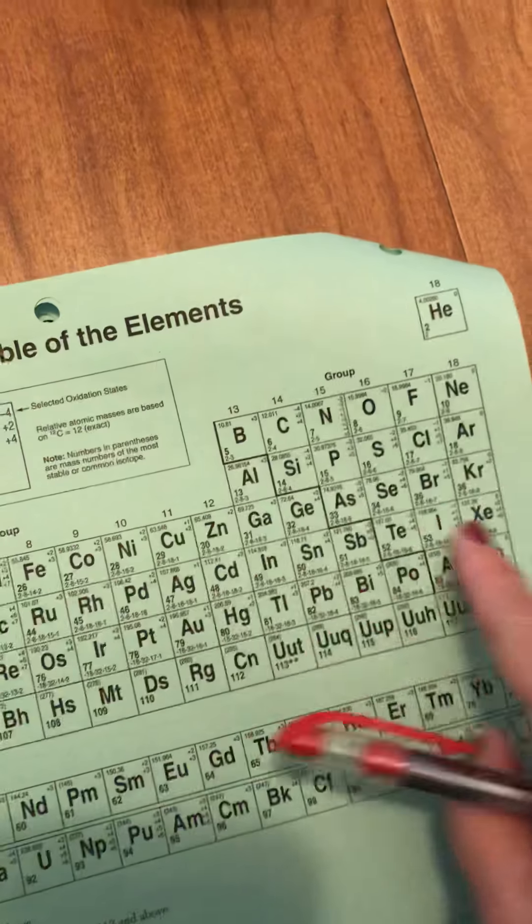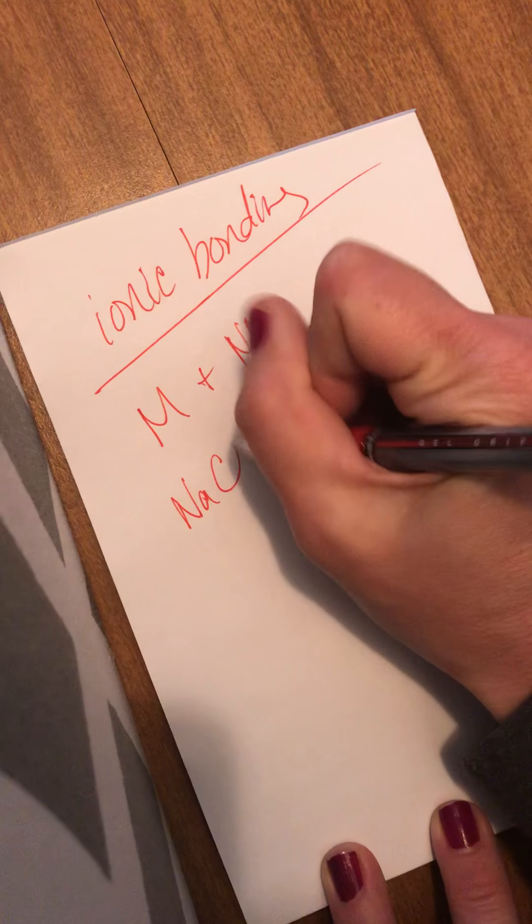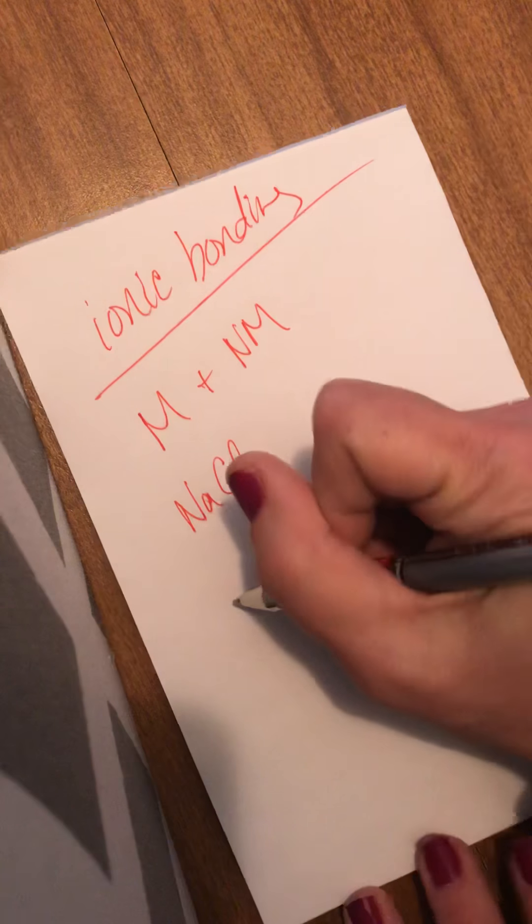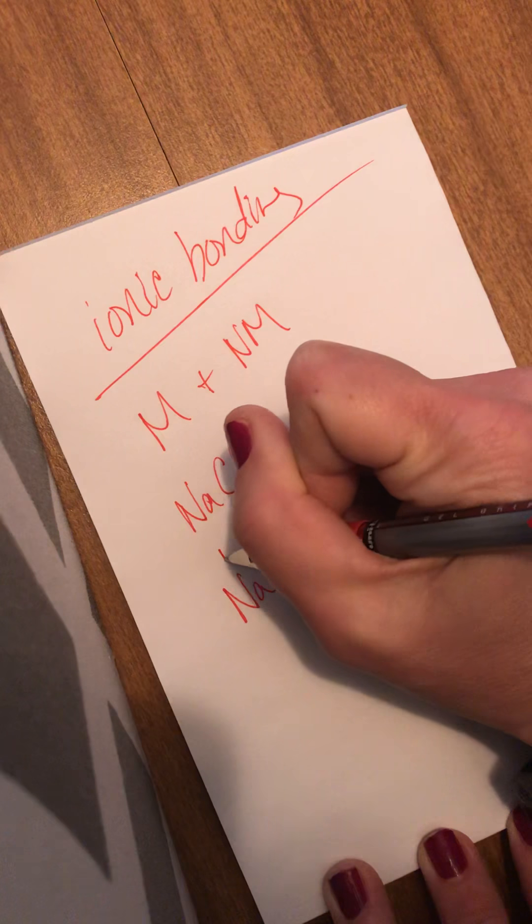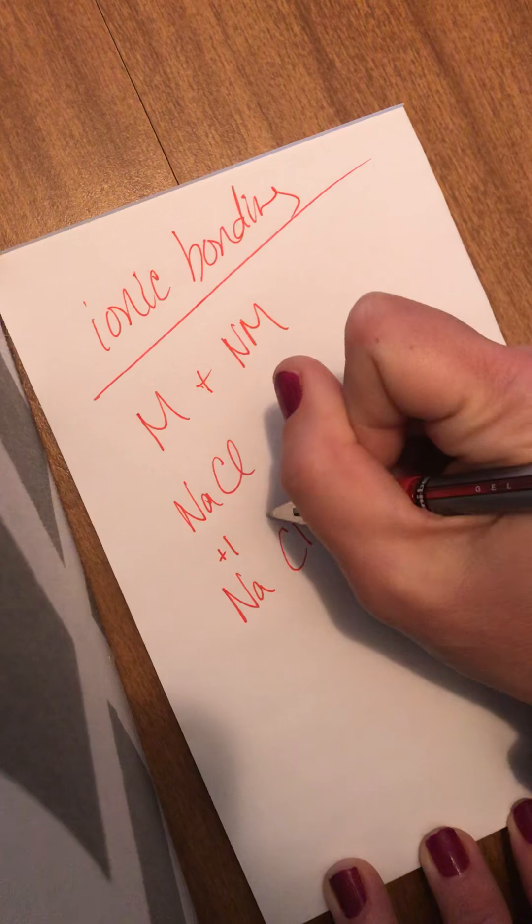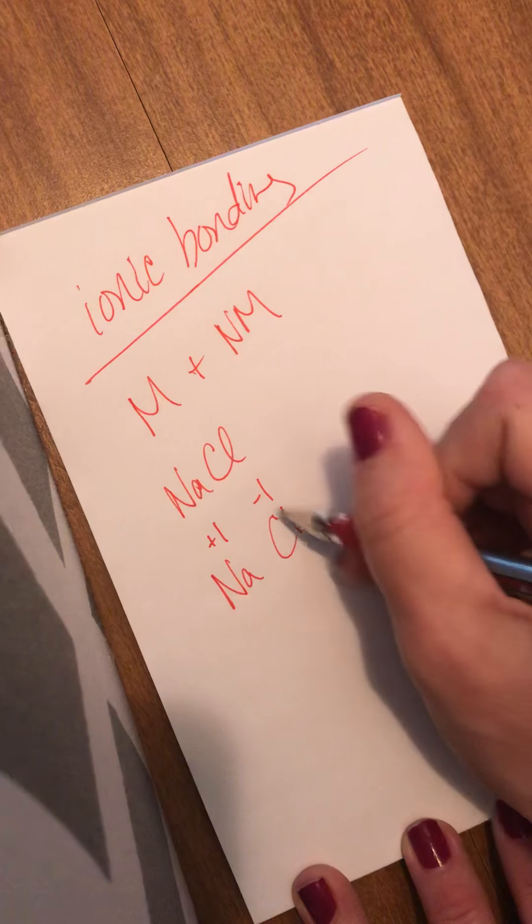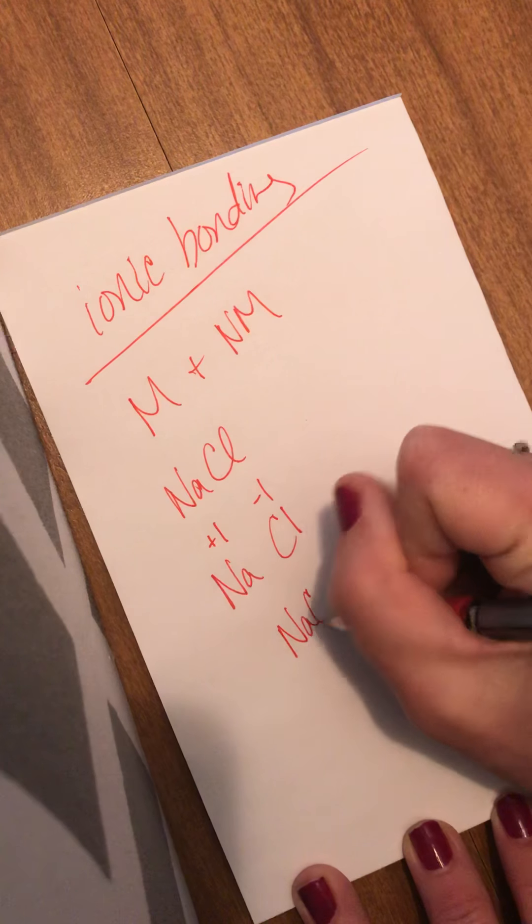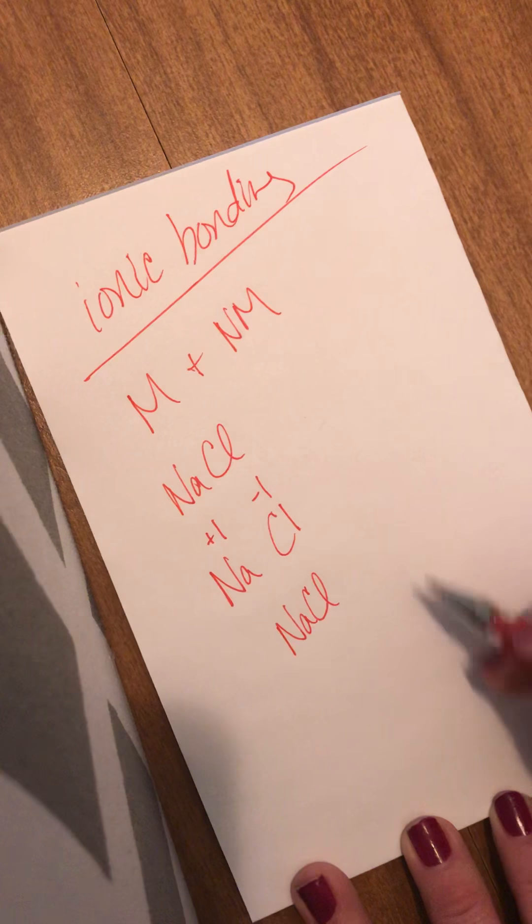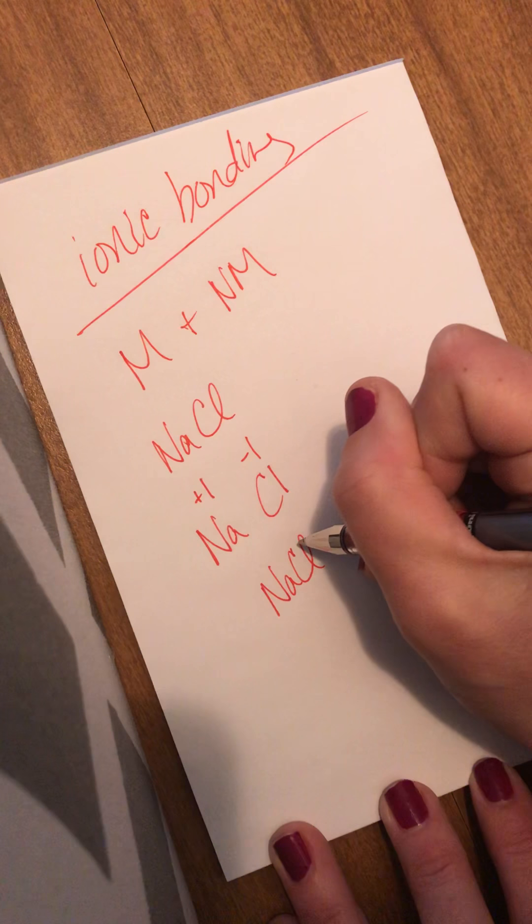So salt NaCl, that is the result of an ionic bond. Na would love to lose one electron, Cl would like to gain one electron, so together they make a perfect pair. You crisscross their charges and you end up with NaCl.